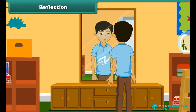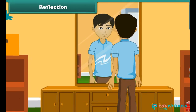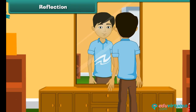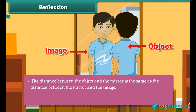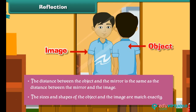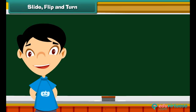Reflection: When you position yourself in front of a mirror, what you see in the mirror is your reflection. You are the object and the reflection is the image. Here are some interesting facts about reflections: the distance between the object and the mirror is the same as the distance between the mirror and the image. The sizes and shapes of the object and the image match exactly.